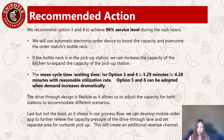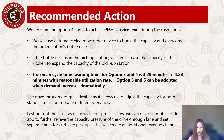For the simulation results, we recommend options 3 and 4 to achieve a 96% service level during rush hours. We use the automatic ordering machine to boost capacity and overcome the order station's bottleneck. If the bottleneck is in the pickup station, we can increase the capacity of the kitchen to expand the pickup station's capacity. The mean waiting time is shorter than the national drive-through service time. Options 5 and 6 can be adopted when demand increases dramatically. The drive-through design is intentionally made flexible, allowing us to adjust capacity at both stations to accommodate different scenarios.